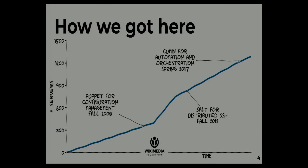How did we get here? Our story is very common. At the start, we had just a few servers to configure, so we did everything manually — no need for automation, orchestration, or configuration management. Then we started growing, and with more servers we added some quick automation with Bash or Perl scripts. As we continued to grow, we looked into configuration management solutions, and in our case, Puppet was selected in the fall of 2008.